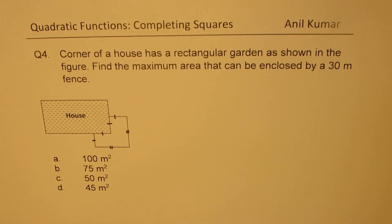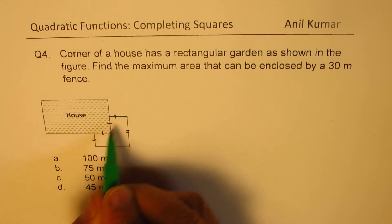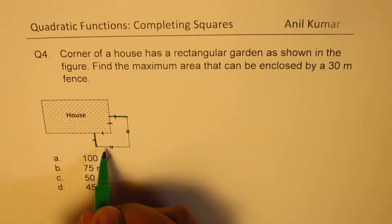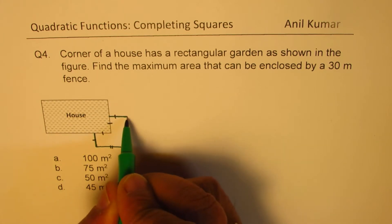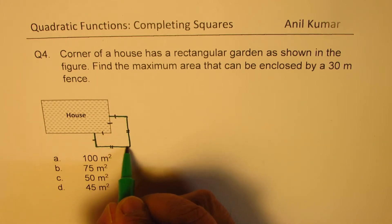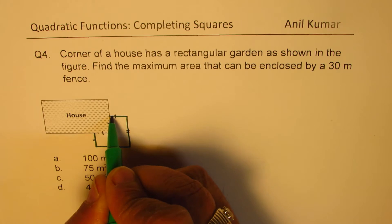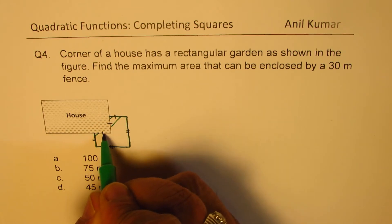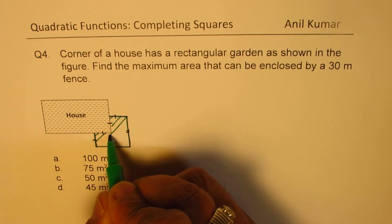Here we have a house. This is the fence we're talking about, a 30 meter fence. We need to maximize this area, which is the garden.